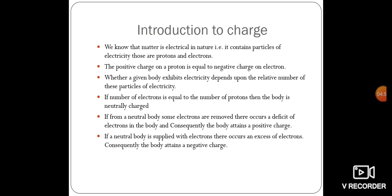First, we will understand what is charge. We know that matter is electrical in nature. Every matter on this earth consists of atoms, and atoms consist of protons and electrons, which are the charged particles. The positive charge on a proton is equal to the negative charge on an electron. The number of protons equals the number of electrons, so the charge of a particular atom is neutral during stable conditions.